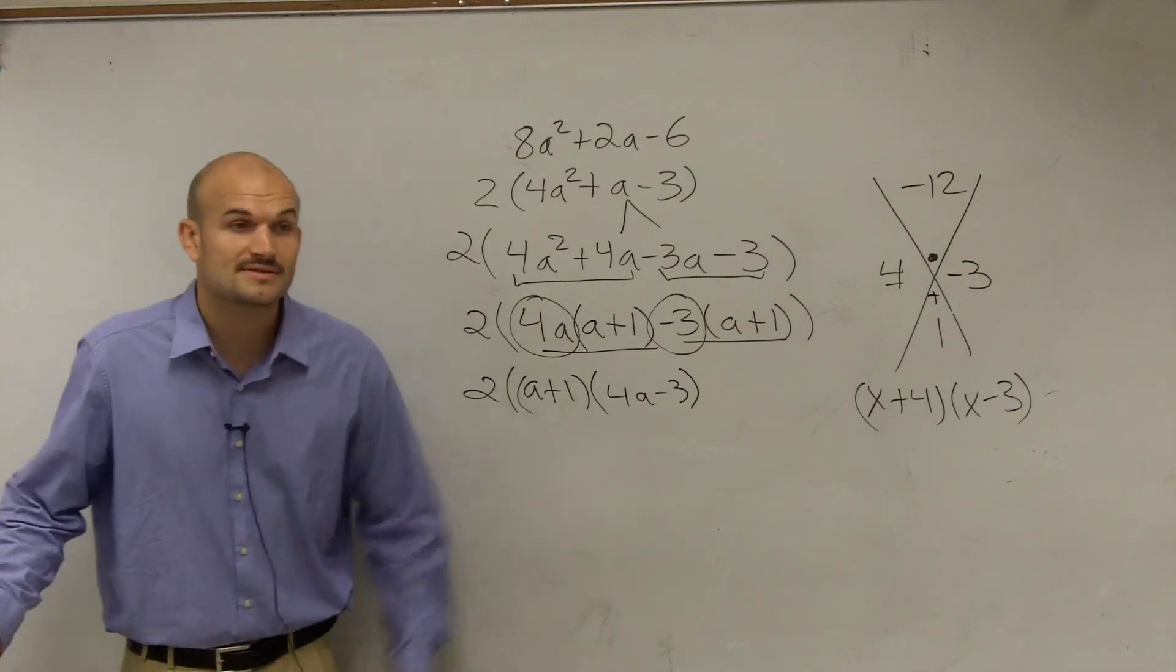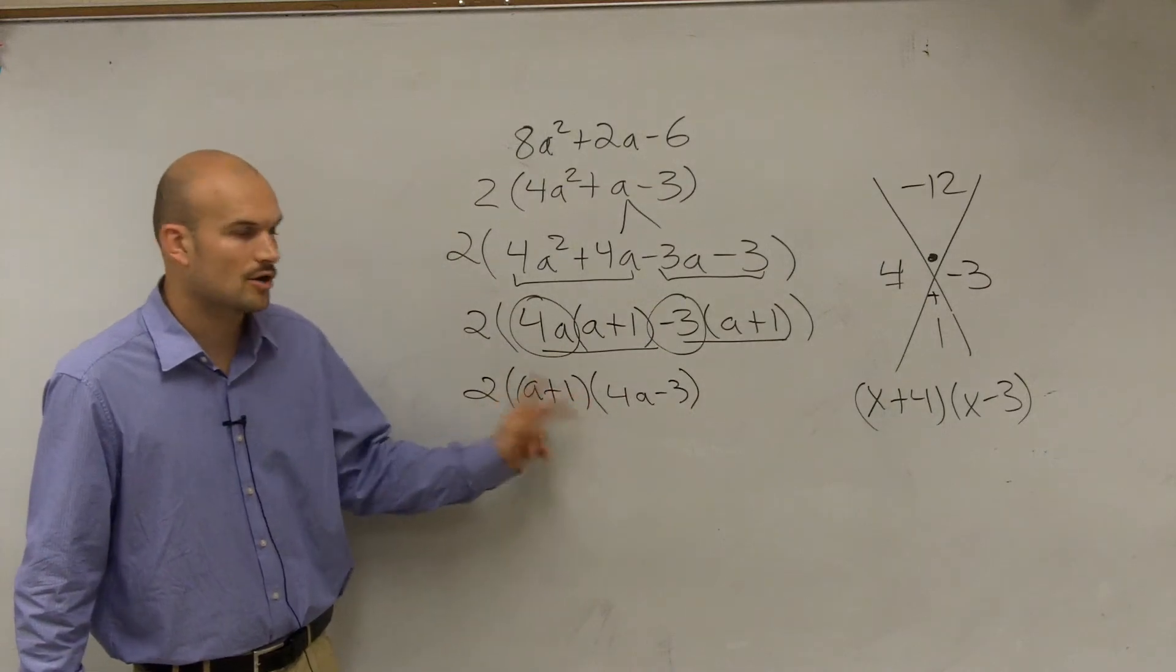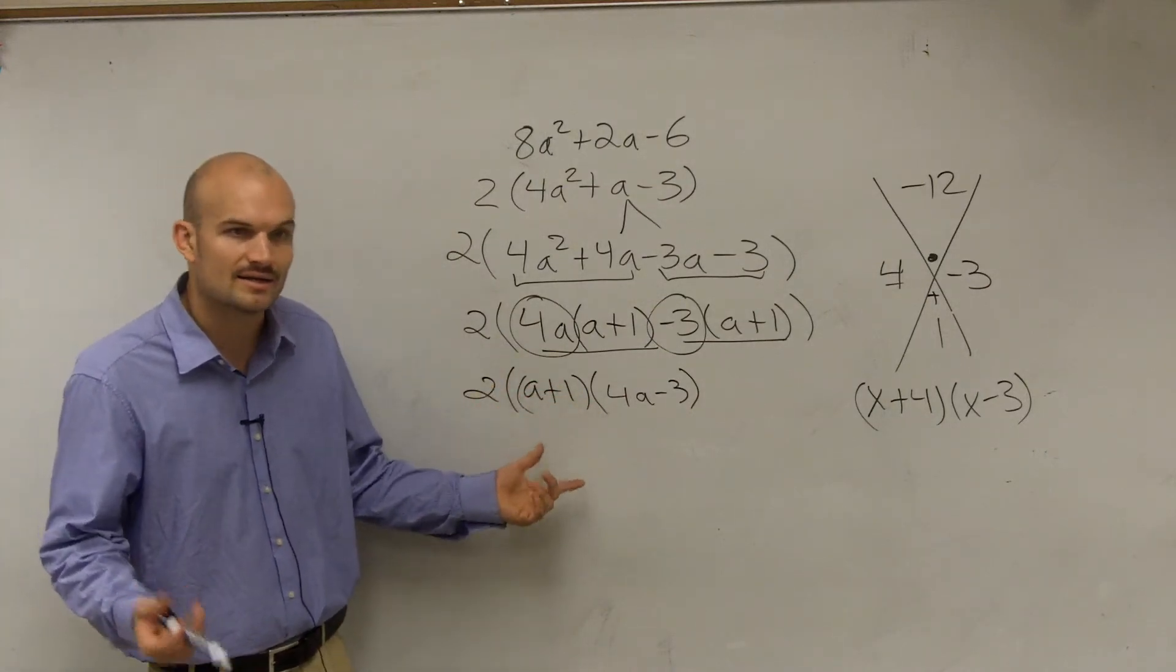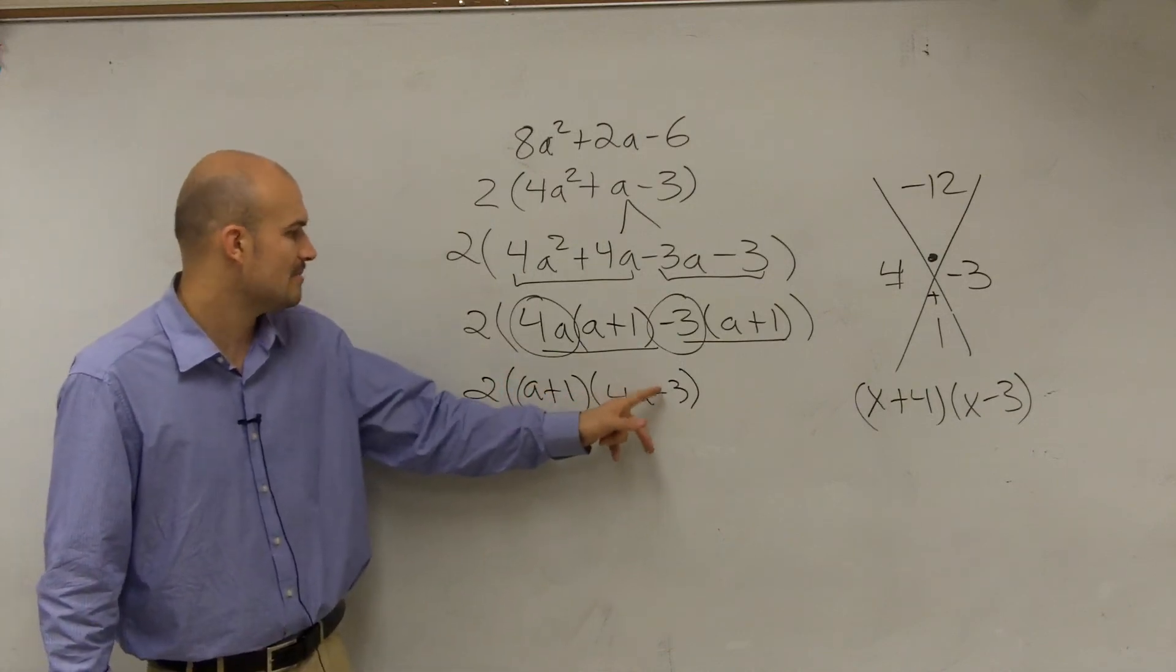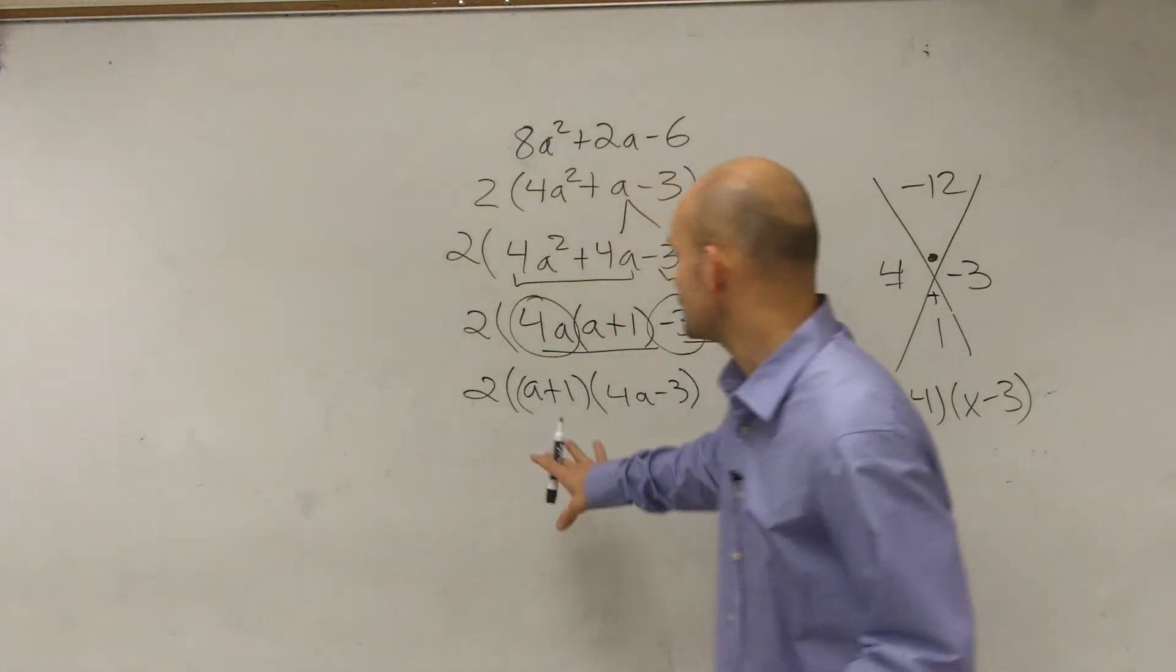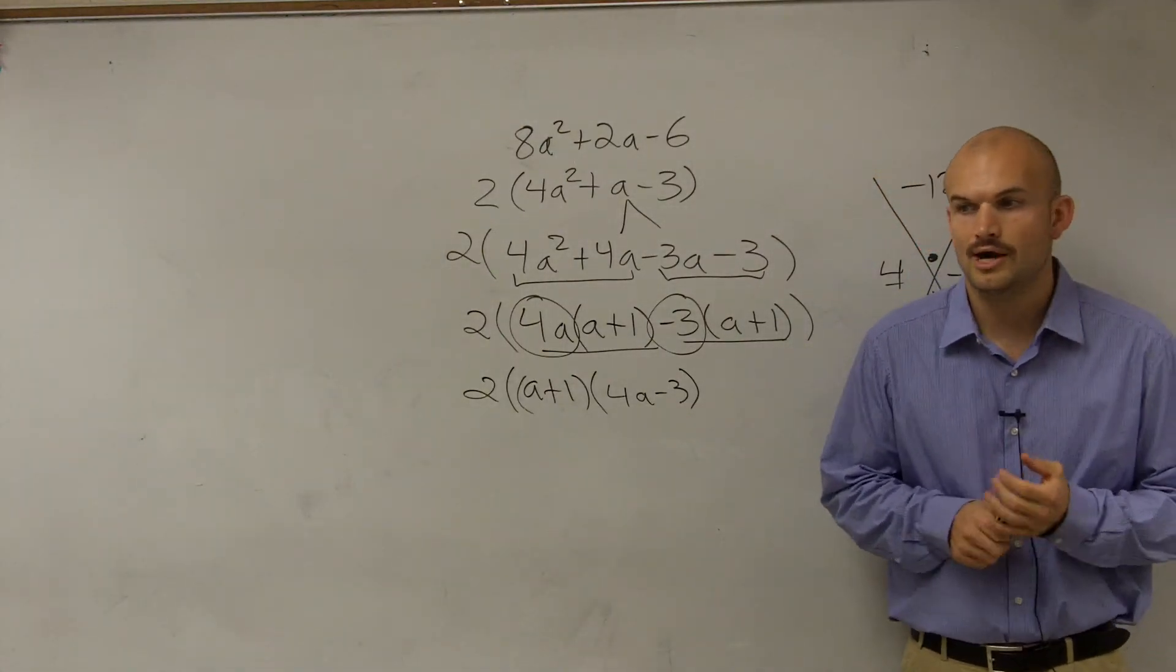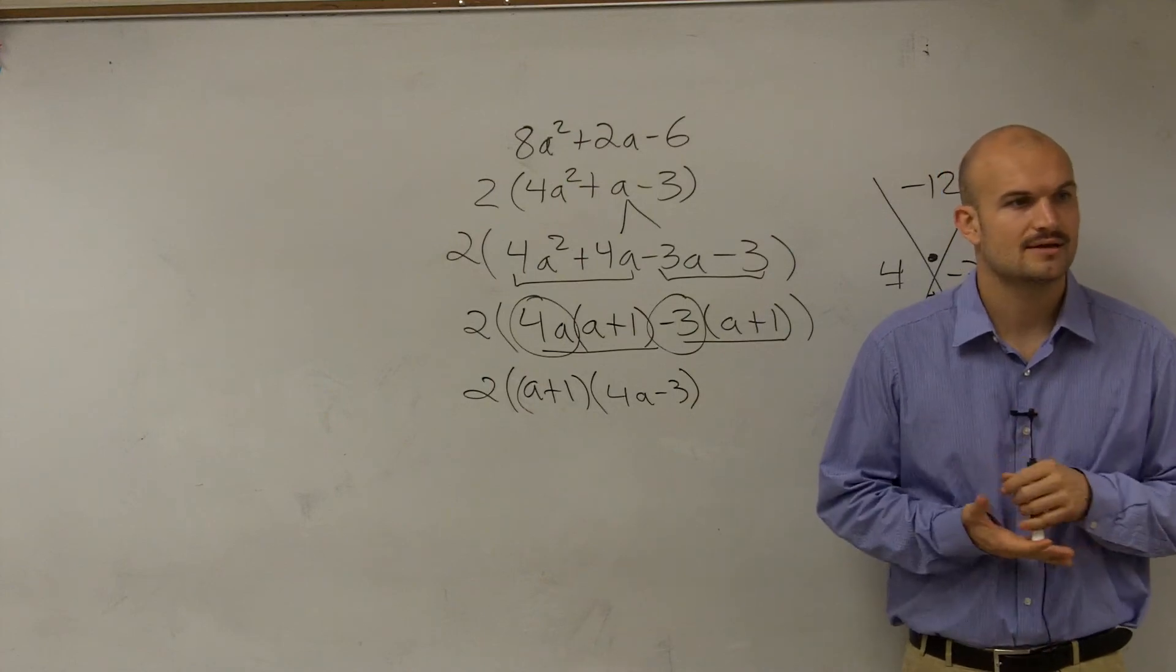So there you go. Now some of you had answers where it was like 4a minus 3 times 2a plus 1, or 2a plus 2. That 2 was distributed to that factor. That's fine. Some of you had factors of a plus 1 times 8a minus 6, because the 2 factored into that one. That's fine as well. But the main important thing you guys should see here is going to be your factored form of your answer. Any questions on this?